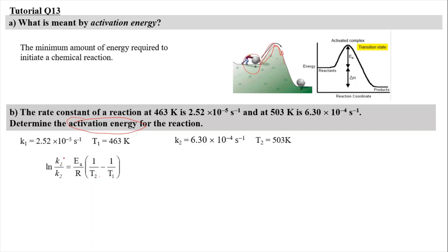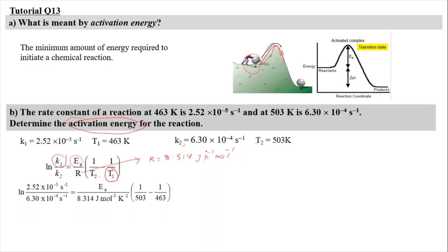K1 and T1 are paired together; don't mix them up. By knowing the information, plug in K1, K2, T1, and T2 into the equation to find Ea. R is the gas constant equal to 8.314 J per Kelvin per mole. Once you substitute and calculate each section carefully, you will get Ea = 155.646 kJ/mol.